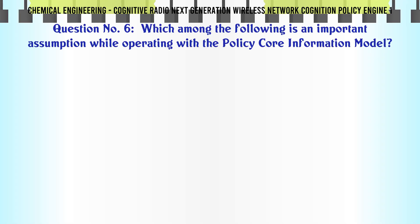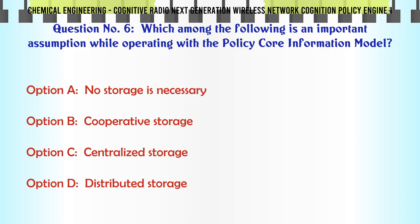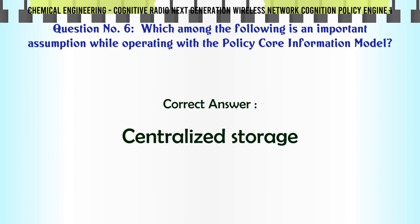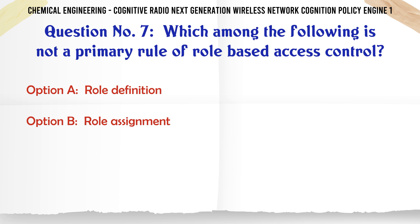Which among the following is an important assumption while operating with the Policy Core Information Model? a. No Storage is Necessary. b. Cooperative Storage. c. Centralized Storage. d. Distributed Storage. The correct answer is: Centralized Storage.